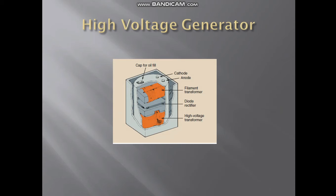And lastly, we have the high voltage generator, which is responsible for increasing the voltage output from the autotransformer necessary for X-ray production. If we look inside the high voltage generator, we can see that it has three main components: the high voltage transformer, filament transformer, and the diode rectifier.